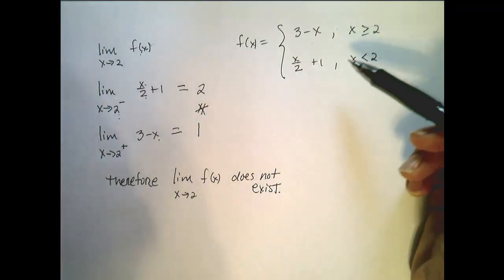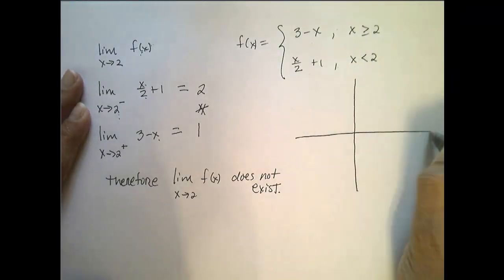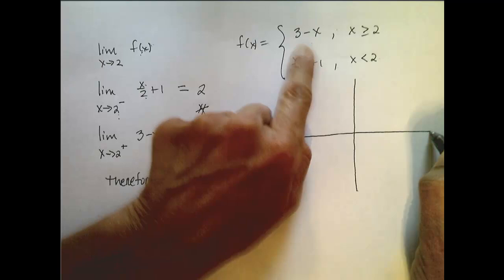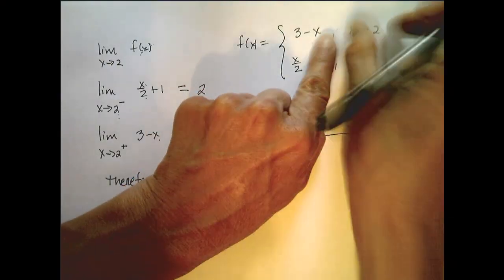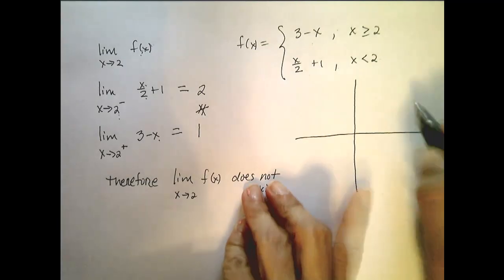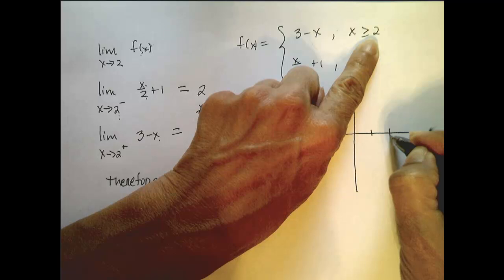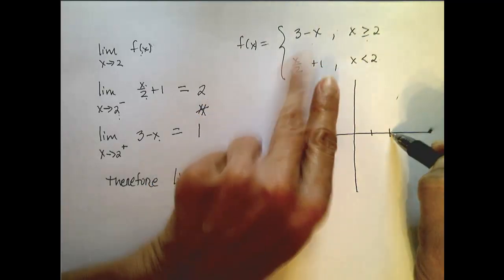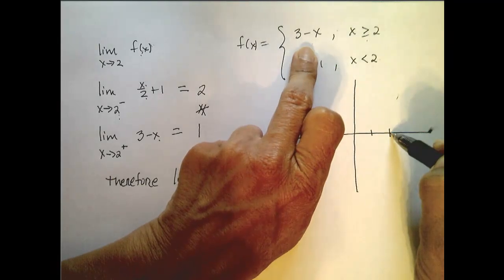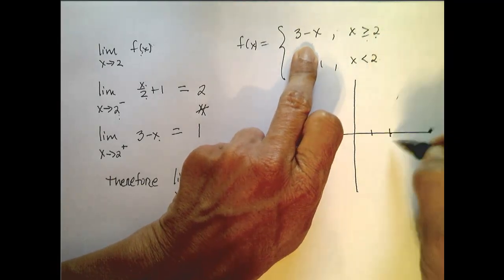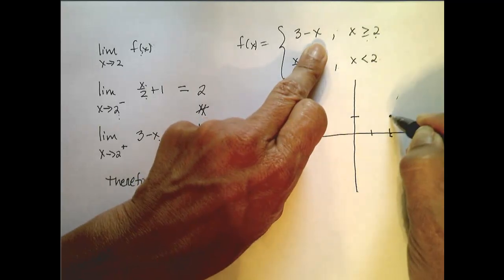If I were to sketch the graph of this piecewise function, well that's not hard to do. I'm going to have to have two different drawings based on the different domains of my piecewise function. So 2 is the place where things switch. When x is greater than or equal to 2, my function looks like this line, 3 minus x. I know that when it starts at 2, if I plug in 2, I get 1.